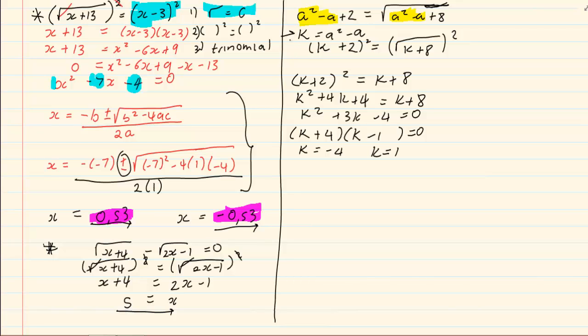Go back to where we say k is equal to a squared minus a. Remember the question would say solve for a or solve for x. Read the question, in this case it is solve for a. So we got a squared minus a is equal to negative 4 and on the right hand side we have a squared minus a is equal to 1.